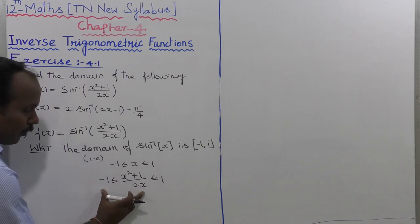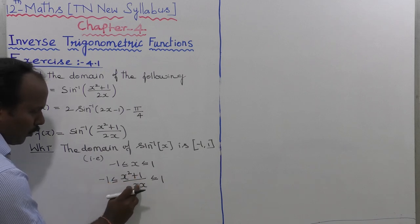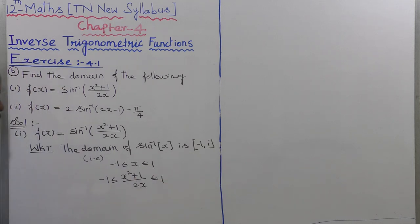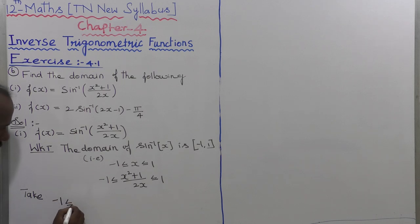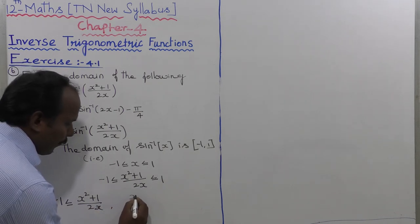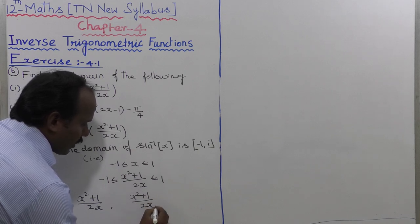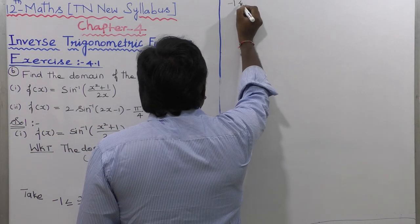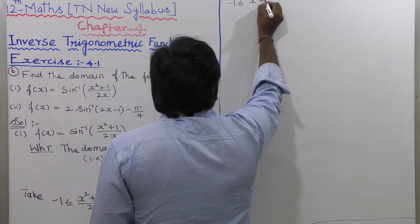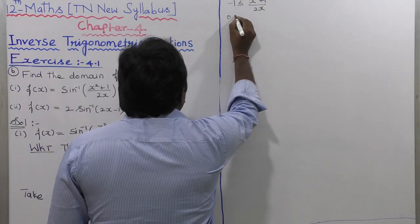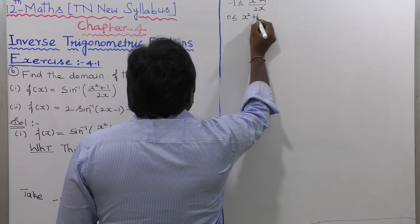Taking the first inequality term: minus 1 less than or equal to (x squared plus 1) divided by 2x. Moving minus 1 to the right side, we get 0 less than or equal to (x squared plus 1) divided by 2x plus 1, which gives 0 less than or equal to (x squared plus 1 plus 2x) divided by 2x.